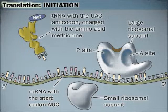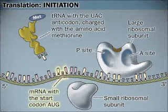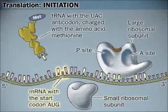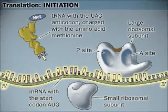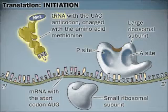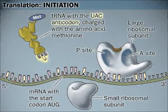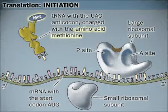Translation is RNA-directed polypeptide synthesis. An initiation complex forms at the start codon of the mRNA. The complex consists of the messenger RNA, a tRNA with the complementary anticodon charged with the first amino acid — always methionine — and the small ribosomal subunit.